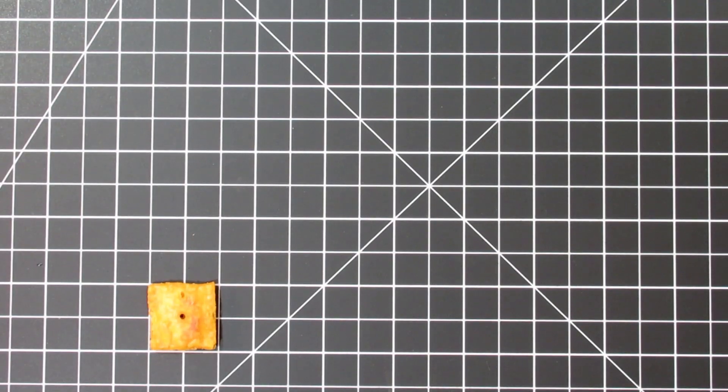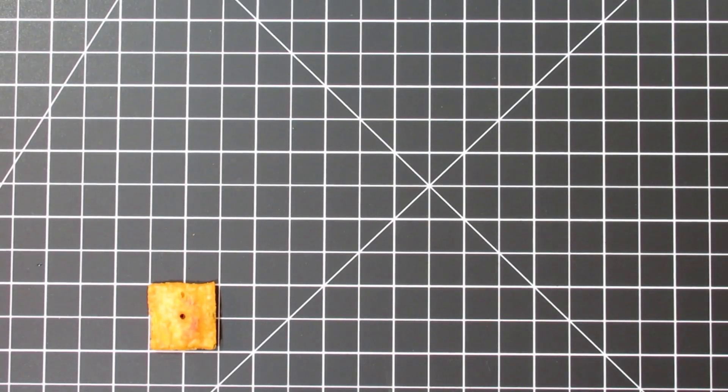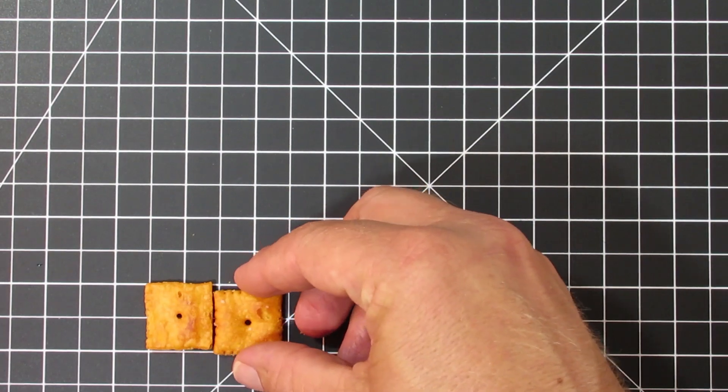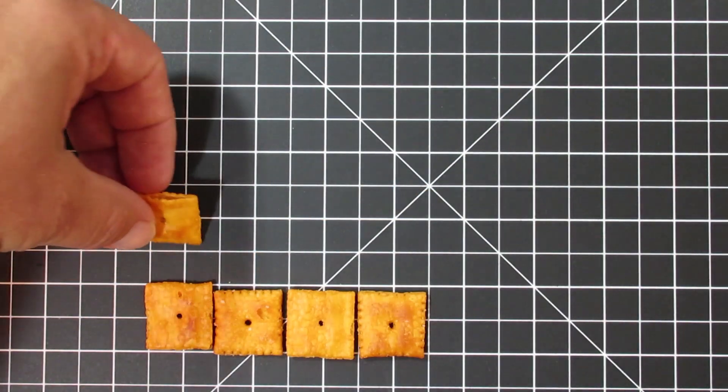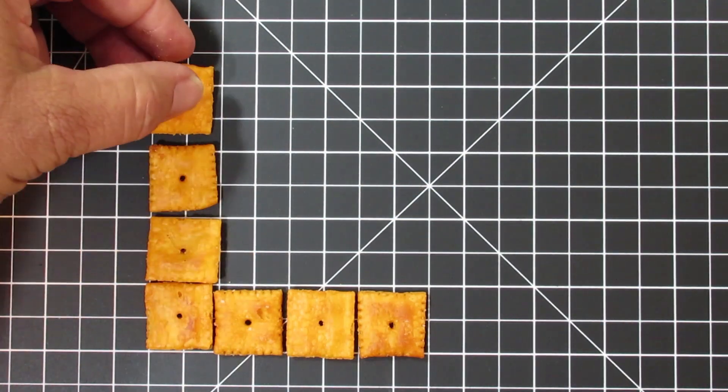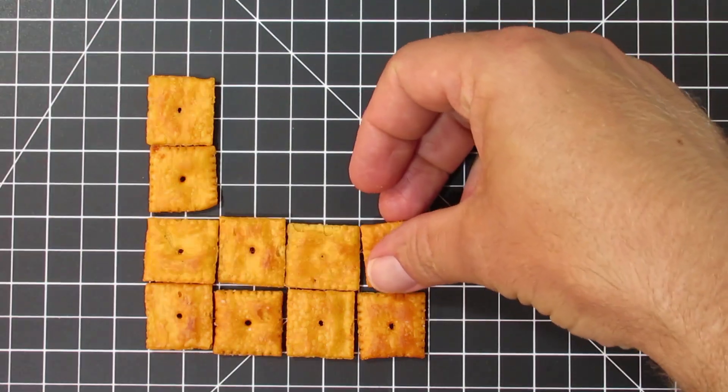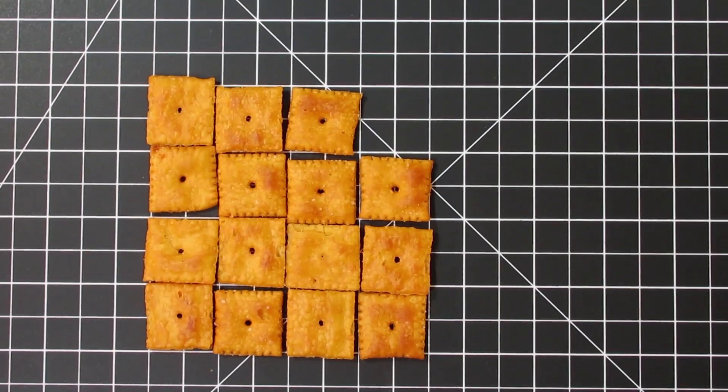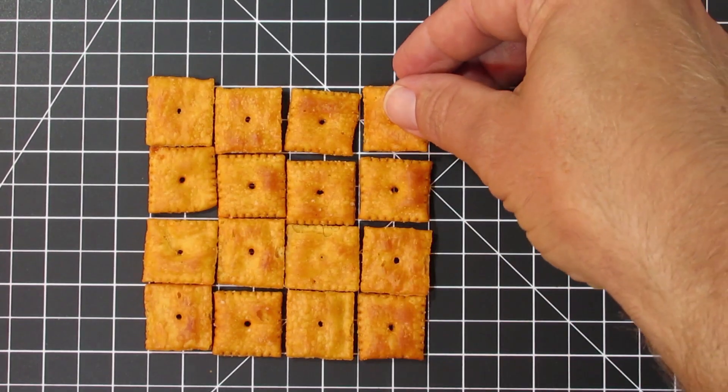So let's say you're trying to find an easy, fun way to kind of model finding the area of a square or a rectangle. Cheez-its are an easy way to do it. This square has a base of 4 and a height of 4. So once we fill in all our Cheez-its, we have a total of 16 Cheez-its, or like 16 centimeters squared.